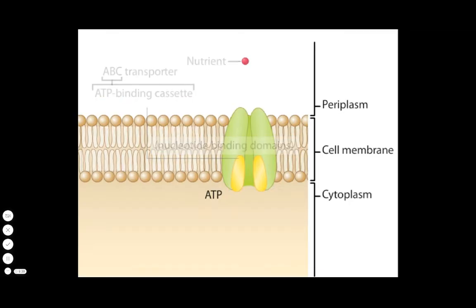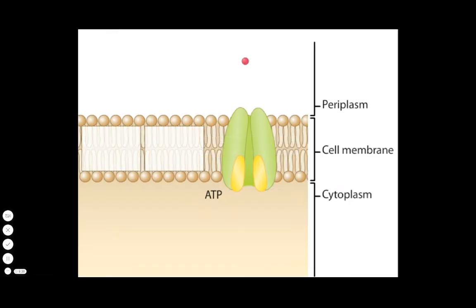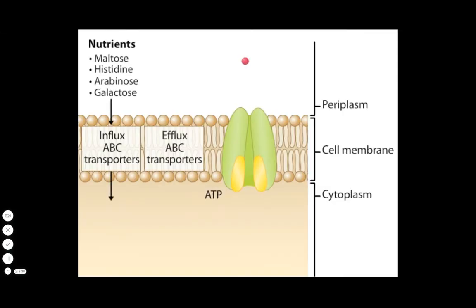There are two main types of ABC transporters: influx and efflux. Influx ABC transporters carry critical nutrients such as sugars and amino acids. Efflux ABC transporters include multidrug pumps that drive out antibiotics and toxins. Other efflux transporters secrete enzymes such as proteases and lipases out of the cell.